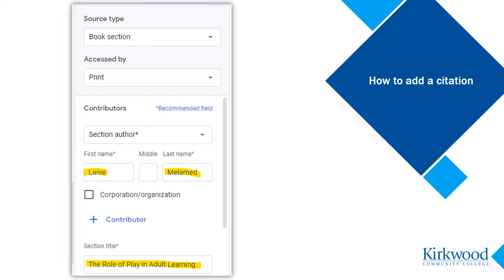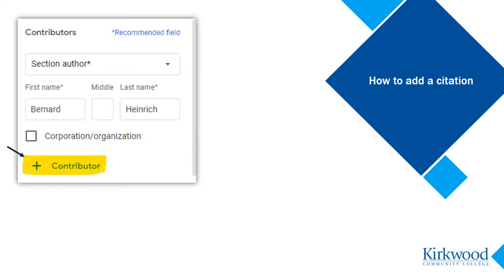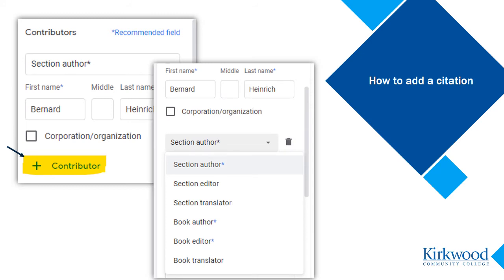Fill in what you can find out about the source, skipping any elements that don't apply. Remember, in the last step of this process, you will have a chance to correct anything that the citation tool doesn't do properly. If you have two or more authors, or if you have an author as well as an editor, click the plus contributor button. Then select the role — author, editor, and translator are options.